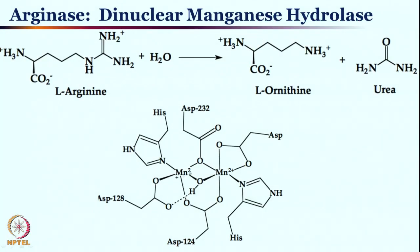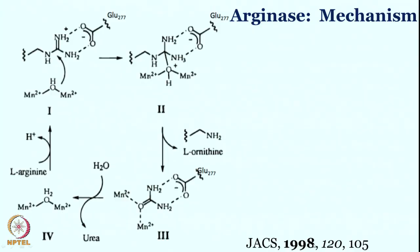To simplify the structure: two metal centers bridged by hydroxo and bridged by carboxylate. Aspartate 124 and aspartate 232 both bridge between the two metal centers. Another aspartate provides bidentate coordination. Aspartate 128 is mono-coordinated with manganese and interacts with the hydroxide through hydrogen bonding. Overall, arginine is converted to L-ornithine and urea, with the bridging hydroxide attacking the arginine substrate.